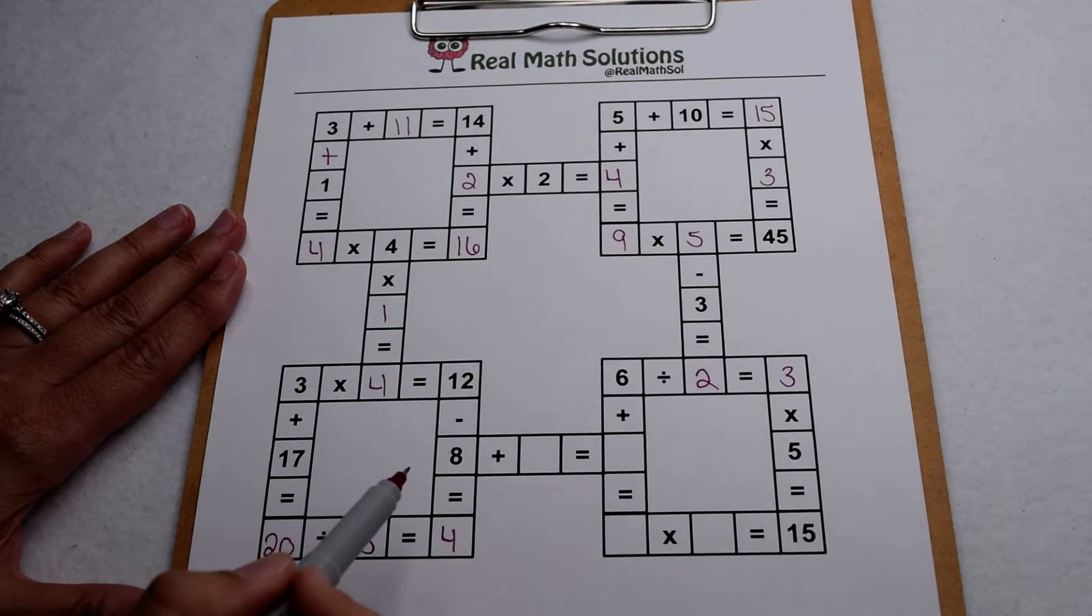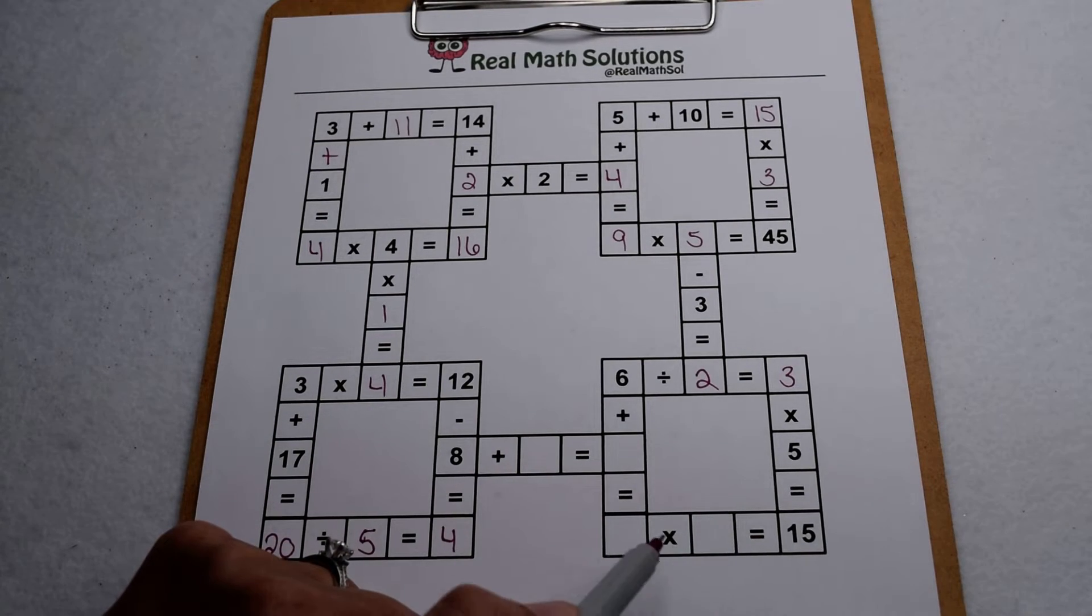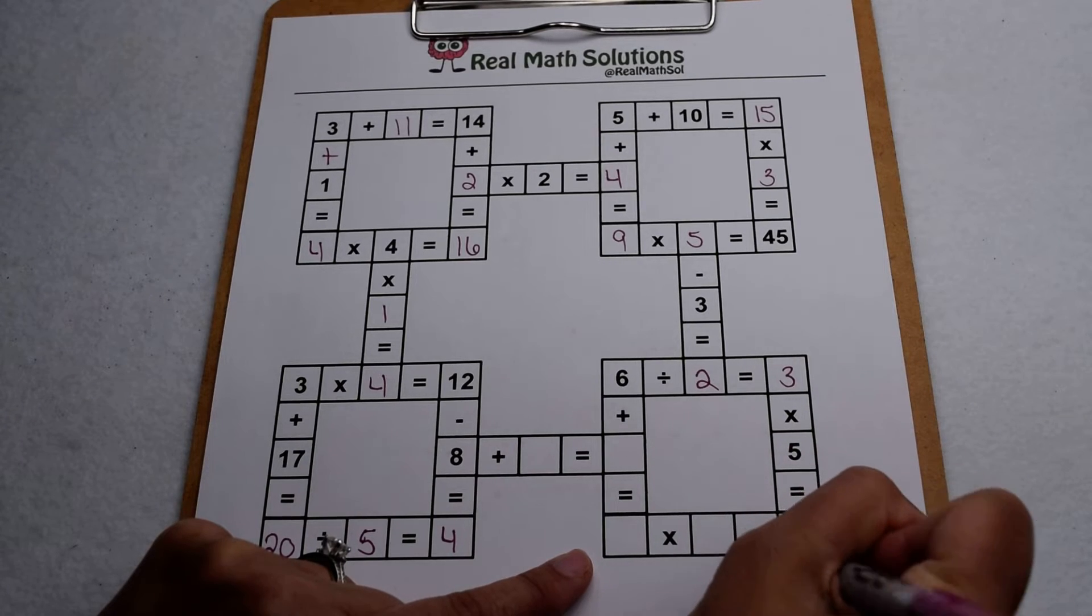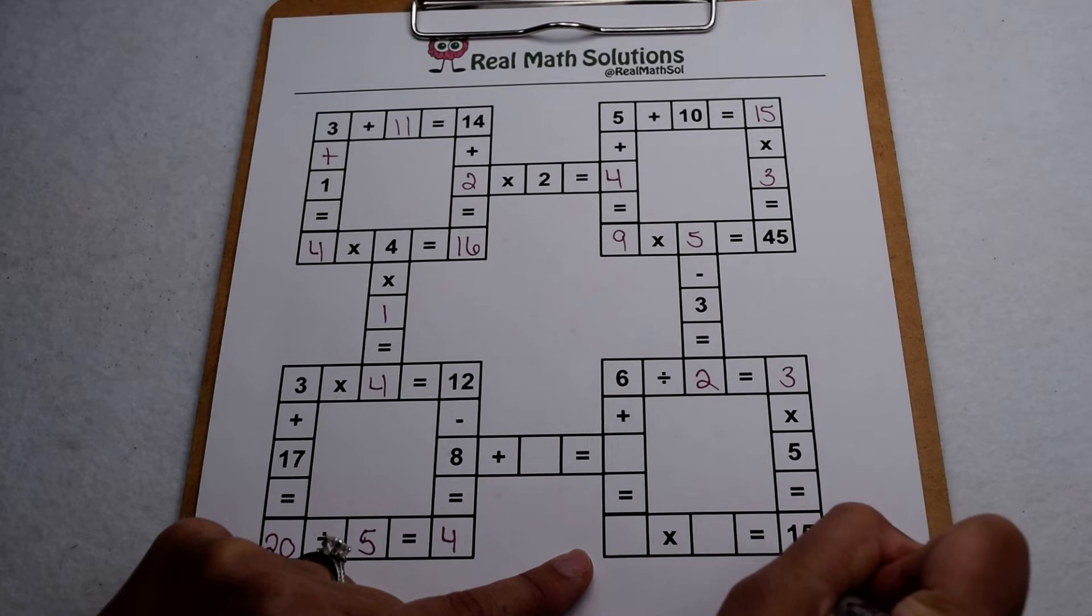Now we've got these three boxes done so we just need to come back here. I don't have anything I can really work off to solve from here so let's start and build. Down here I know something times something gives me 15. So I know my factor pairs of 15 are 1 times 15 and 3 times 5.